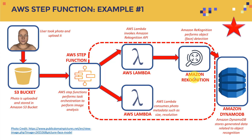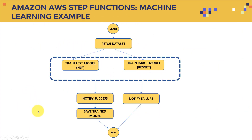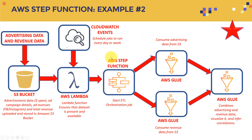Amazon Rekognition will perform object and face detection — it can detect faces and even celebrity faces, which is very powerful. AWS Step Functions manage the whole flow: the user uploads data, Lambda invokes Rekognition to get predictions, and then Amazon DynamoDB stores the generated data related to object recognition — what was detected, the confidence score, and so on. Lambda can also consume photo metadata such as size and resolution.